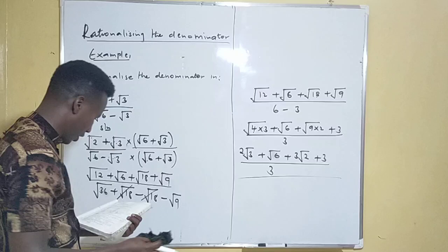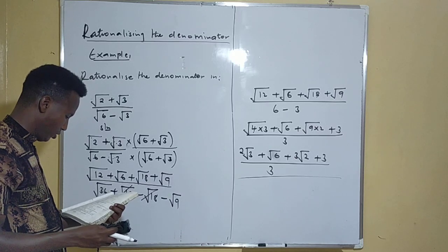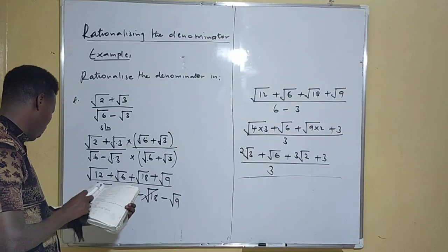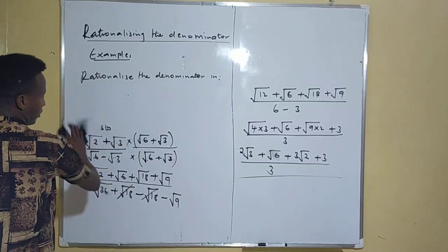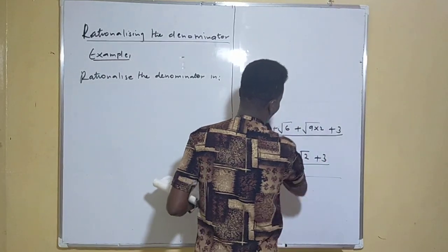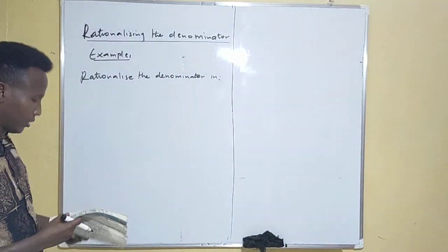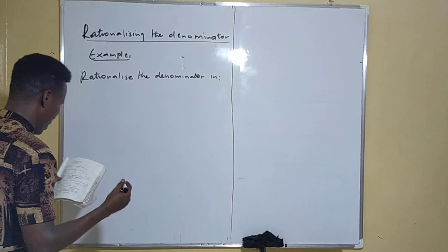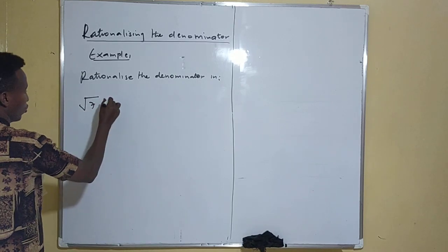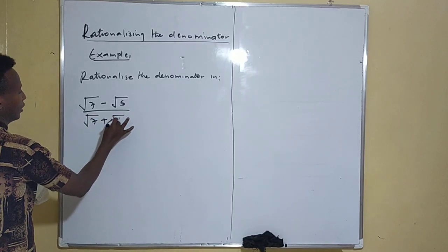Let's go see one more example. Science is not very difficult — what matters is for you to learn this part of rationalizing the denominator, and it will come in the examination. We have root 7 minus root 5 divided by root 7 plus root 5.